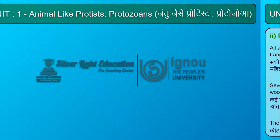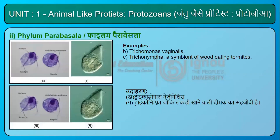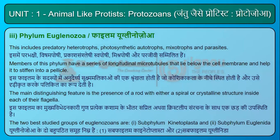Phylum Euglenozoa. This includes predatory heterotrophs, photosynthetic autotrophs, mixotrophs, and parasites. Members of this phylum have a series of longitudinal microtubules that lie below the cell membrane and help stiffen it into a pellicle. The main distinguishing feature is the presence of a rod with either a spiral or crystalline structure inside each of their flagella.